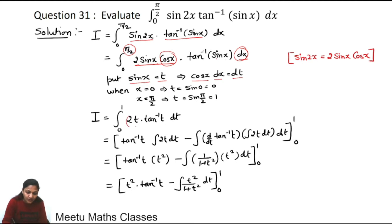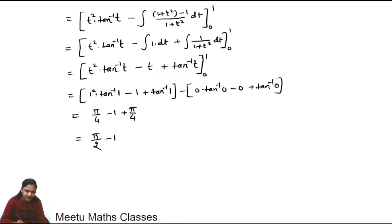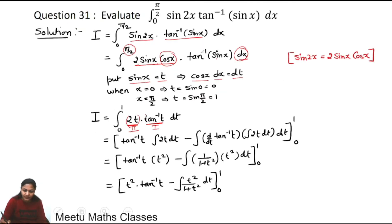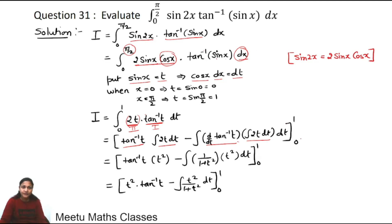Now here we can use integration by parts. We have one algebraic function and one inverse trigonometric function. The inverse trigonometric function is taken as the first function and the algebraic as the second function. Using by parts: first function as-is times integral of second, minus the integral of (derivative of first × integral of second), with limits 0 to 1.